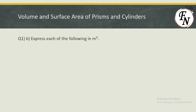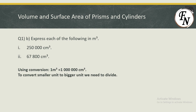Moving on to the next question: express each of the following in meter cube. The values are 250,000 cm³ and 67,800 cm³. We will now be converting centimeter cube into meter cube — the inverse of what we just did. The conversion unit is 1 meter cube equals 1,000,000 centimeter cube, and to convert a smaller unit to a bigger unit, we need to divide.